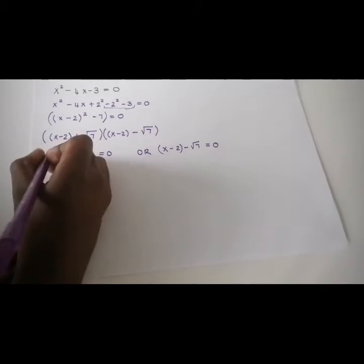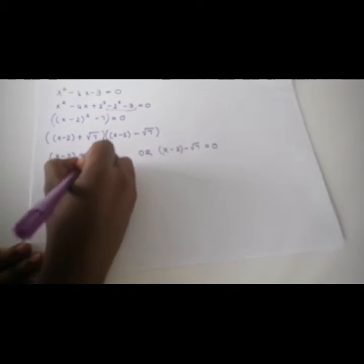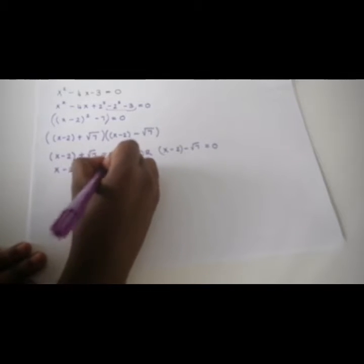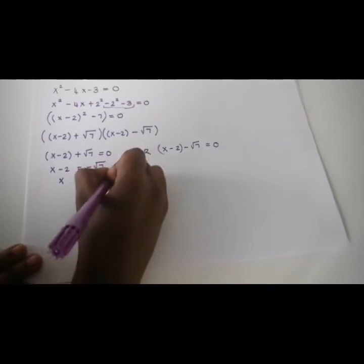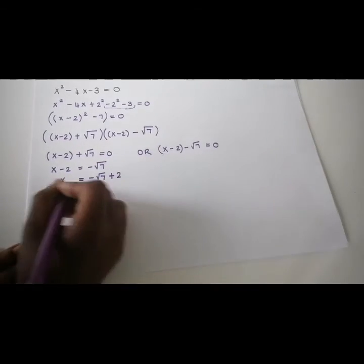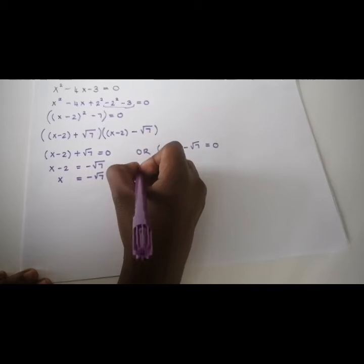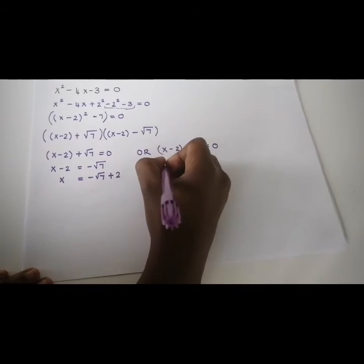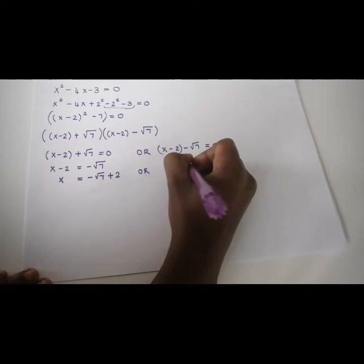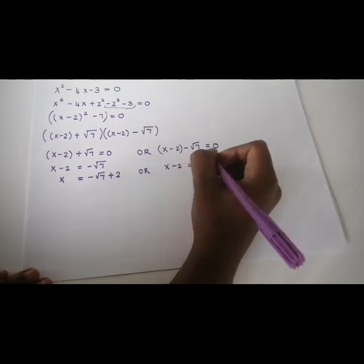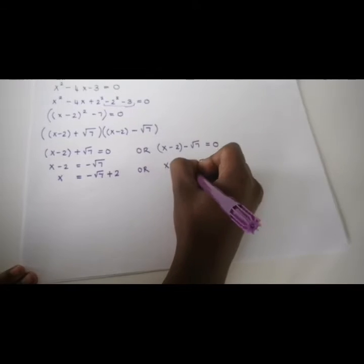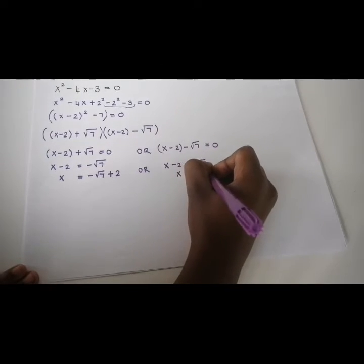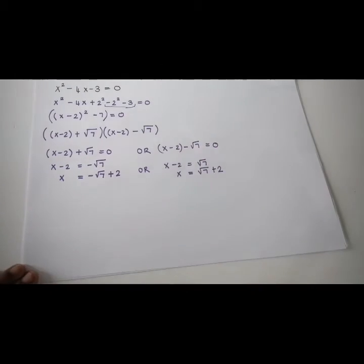Now we solve for x. x minus 2 equals negative root 7, so x equals negative root 7 plus 2. Or, x minus 2 equals square root of 7, so x equals root 7 plus 2. And there you have your answer.